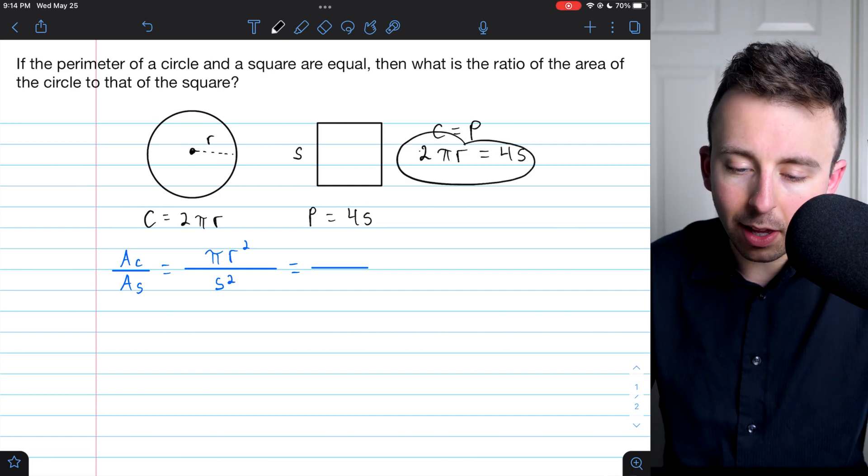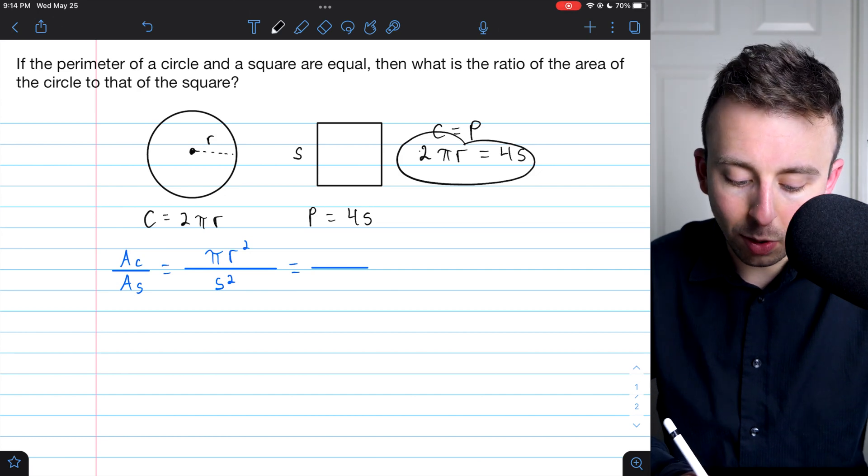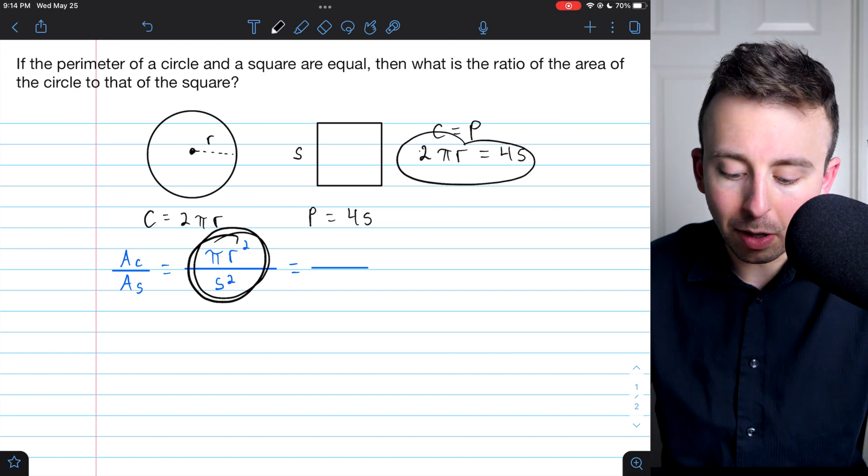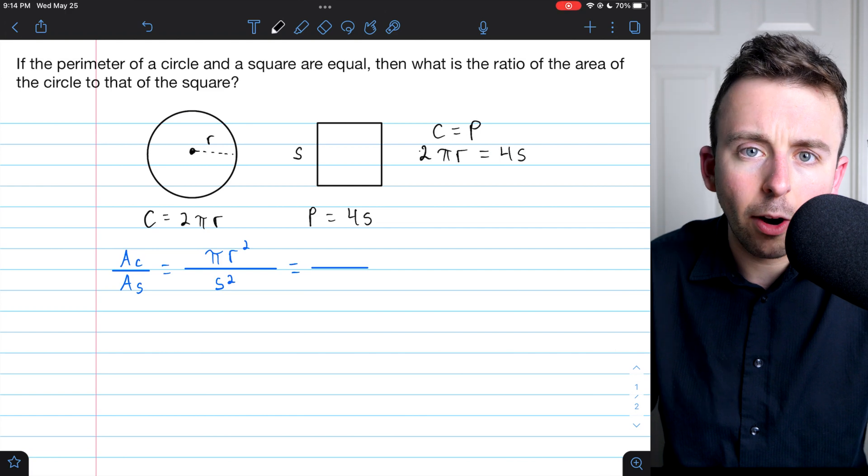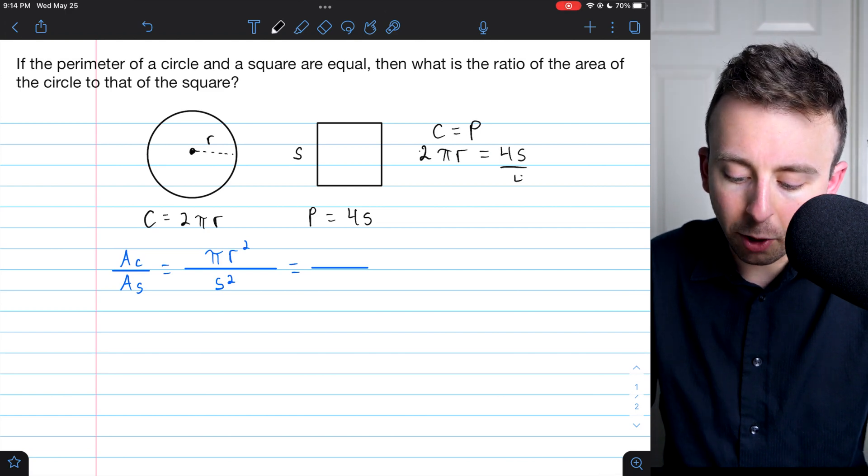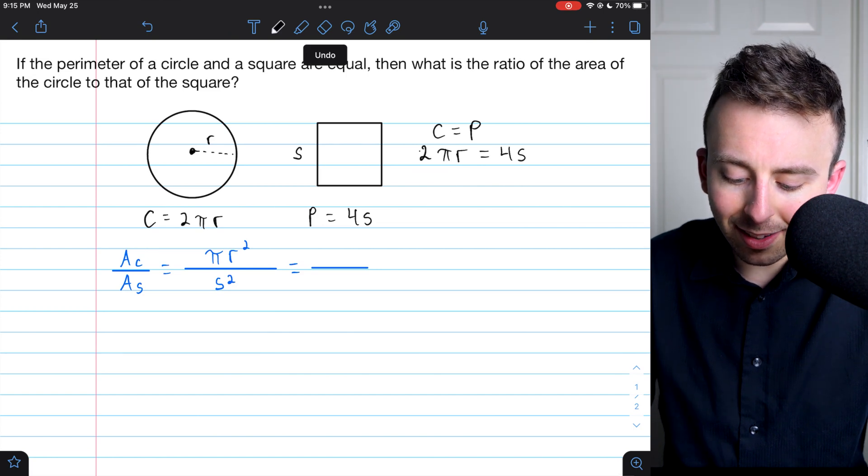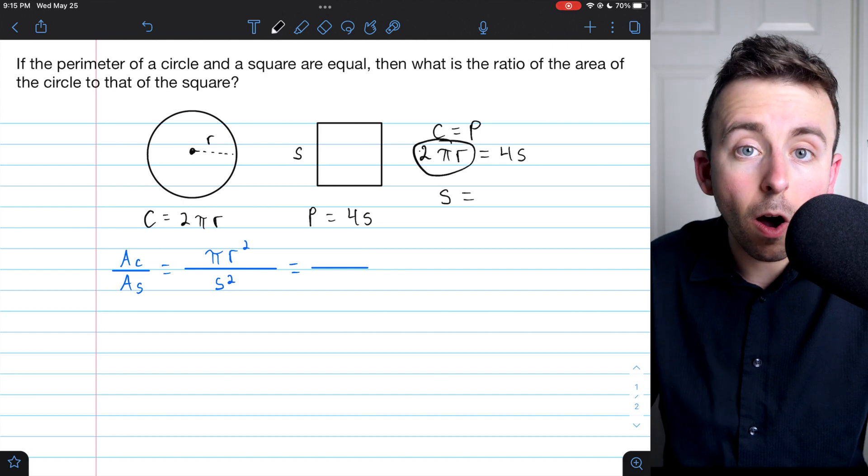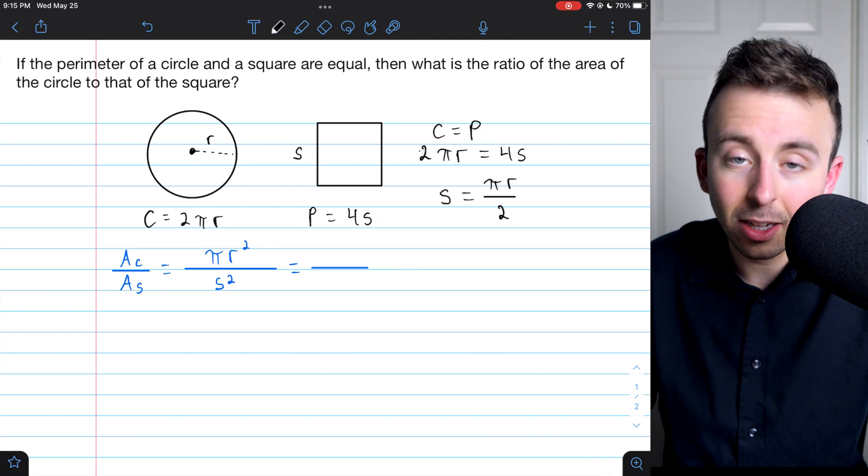Then we could solve this for r, or we could solve it for s, and then do a substitution over in this fraction. Either one will be fine, but I'm going to solve for s, because that's just going to require one step. To solve for s, we'll divide both sides of this equation by 4. That's going to leave us with s equals 2πr over 4, and that simplifies to πr divided by 2.